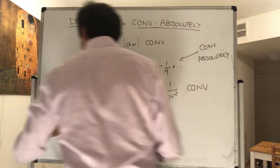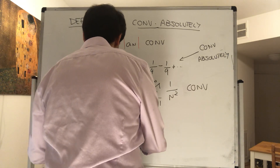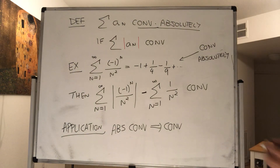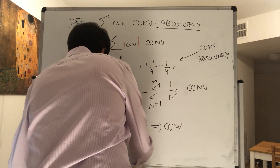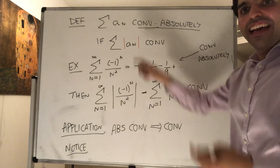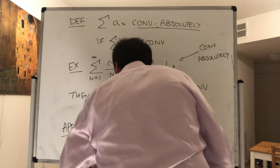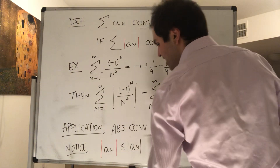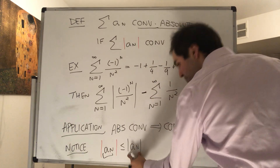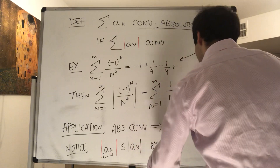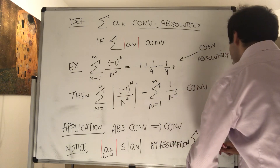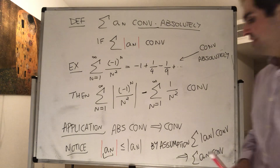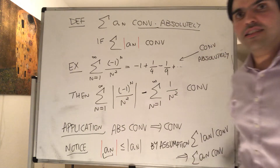As an application, I want to show that absolute convergence implies convergence. Notice that a_n is less than absolute value of a_n, so more precisely the absolute value of a_n is less than or equal to the absolute value of a_n. Since a_n is less than or equal to absolute value of a_n, and by assumption the sum of absolute value of a_n converges, the series itself converges by the comparison test: because the bigger series converges, the smaller series converges as well.